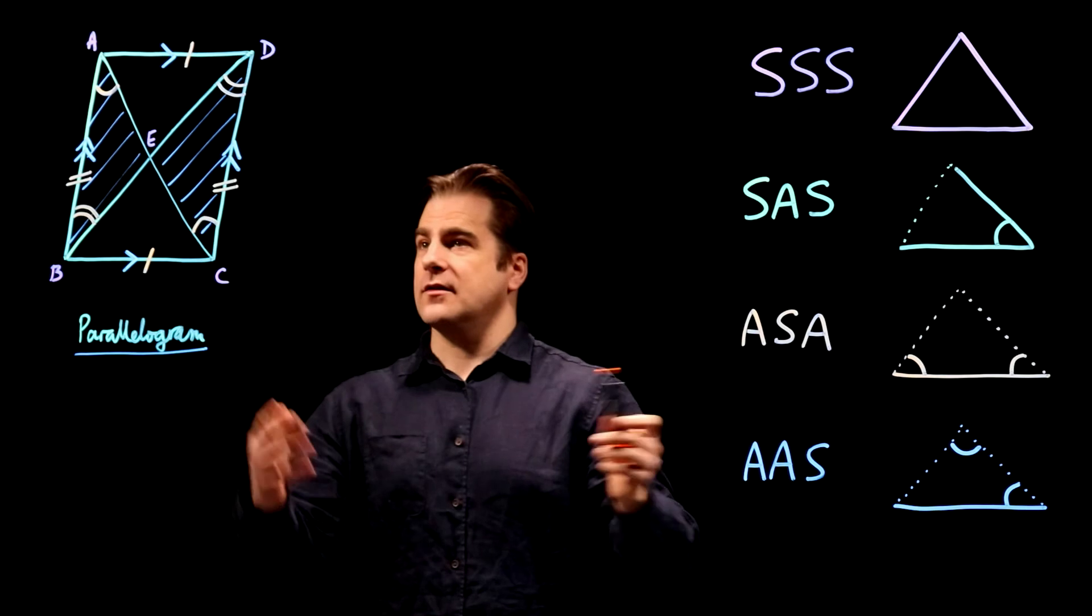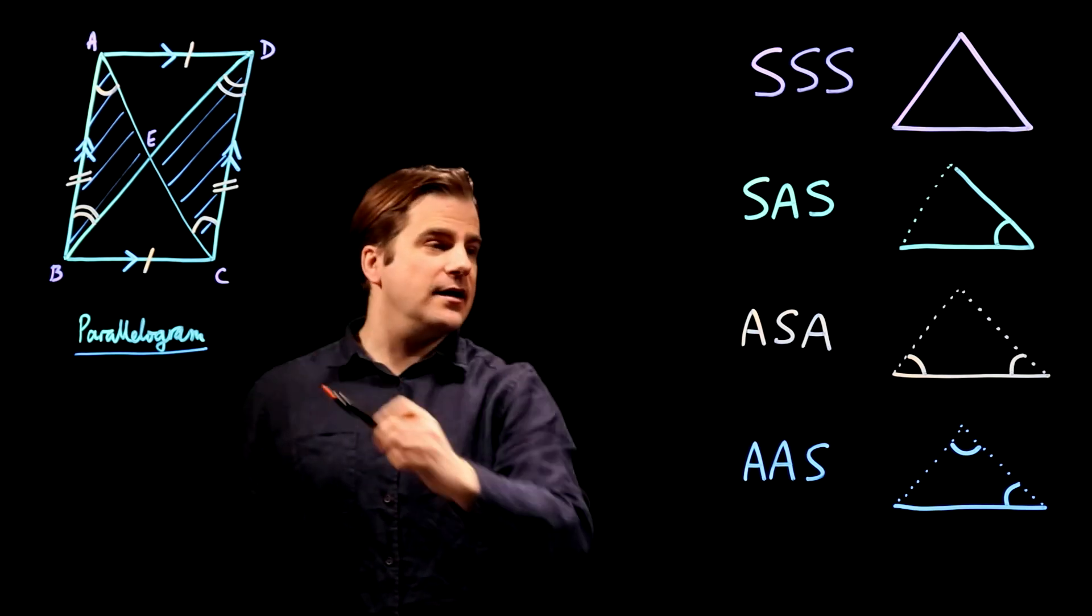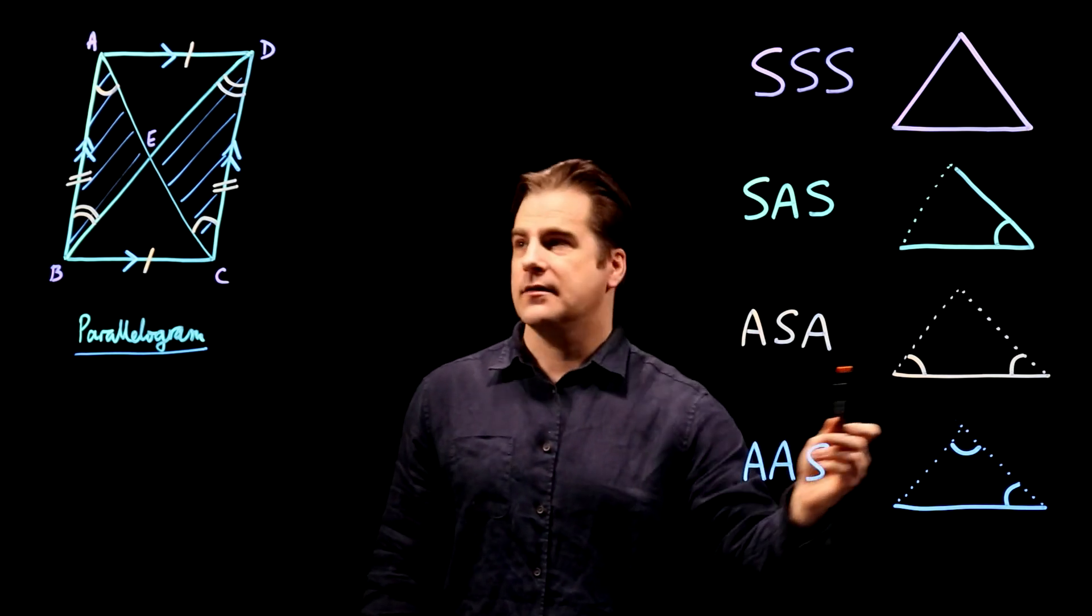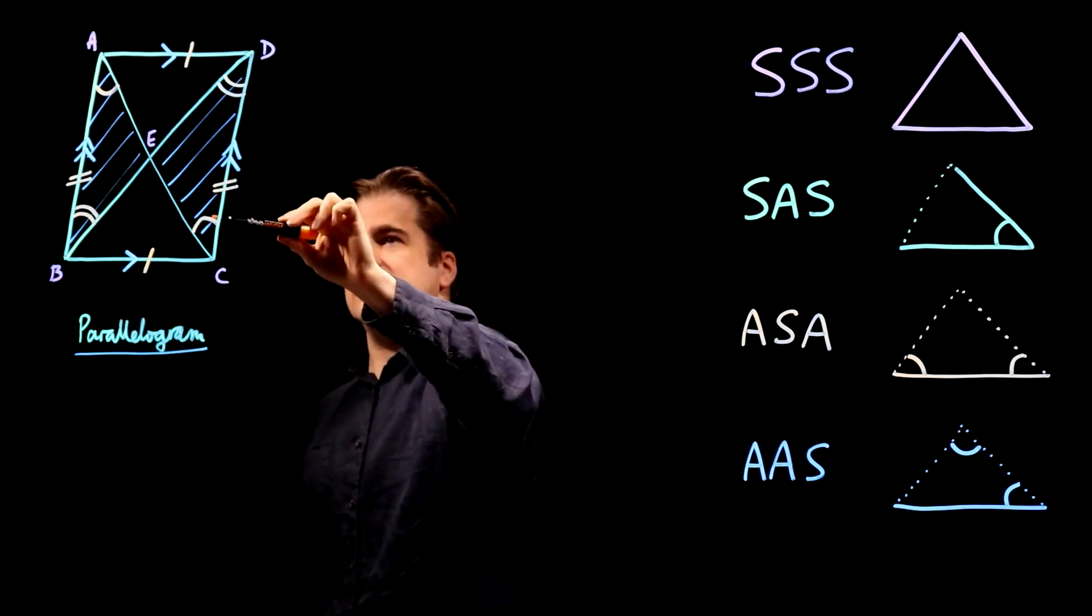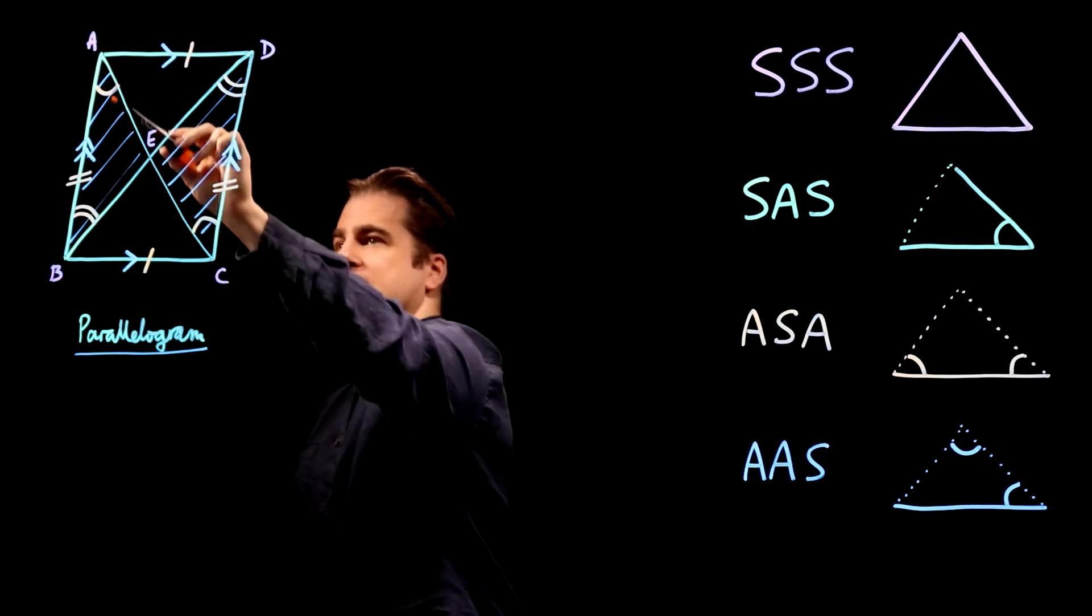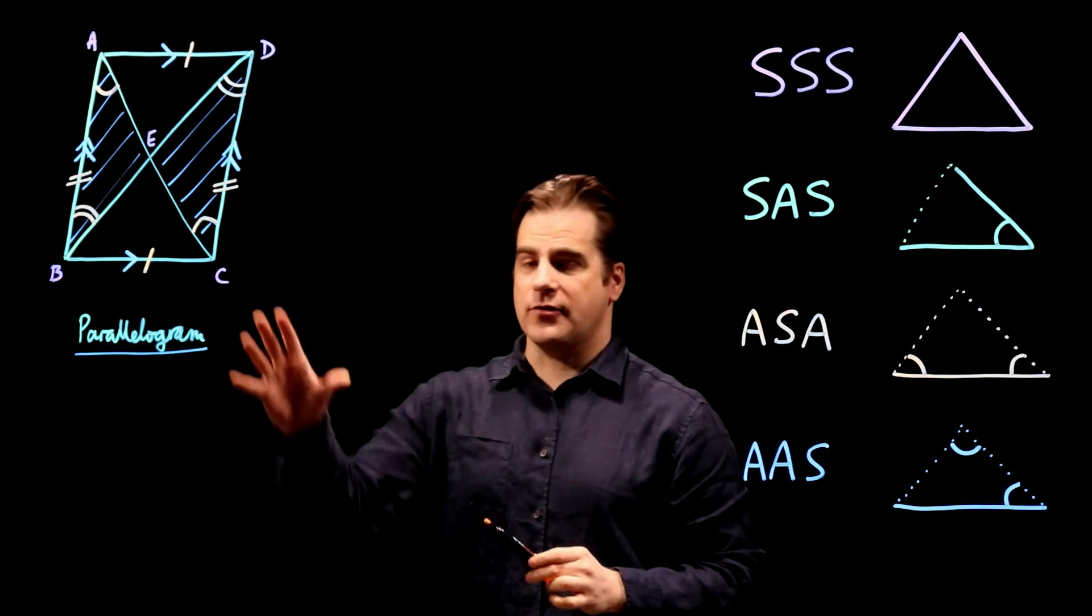So we've done it. Look, we've got angle, side, angle—ASA. That angle, side, that angle. That angle, side, that angle. We've proved congruency.